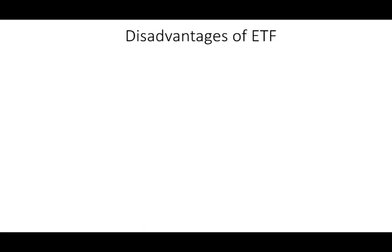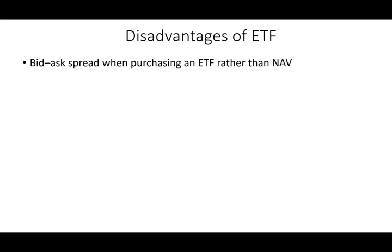There are also some disadvantages of exchange traded funds. There's a bid and ask price — just like a stock, there's a bid when you buy and when you sell, and the broker wants to make a profit. When you buy a mutual fund, it's purchased at NAV with no bid and ask, though that's not a big deal.